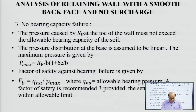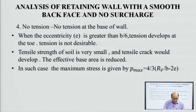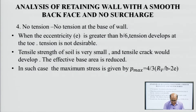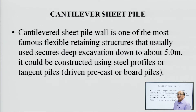Settlement should be within allowable limits. There should be no tension at the base of the wall, as concrete is very weak in tension. When the eccentricity is greater than B/6, tension develops at the toe, which is not desirable. Tensile cracks would develop, reducing the effective base area. In such a case, maximum stress is given by P_max = (4/3) × R'v / (B − 2E), where E is the eccentricity.